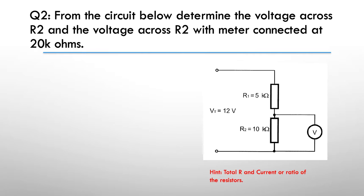Here's the hint: Find R total and find the current and use that to work out the voltages. Or if you know about it, you can also use the voltage divider, so you could actually use the ratio of the resistors as well.